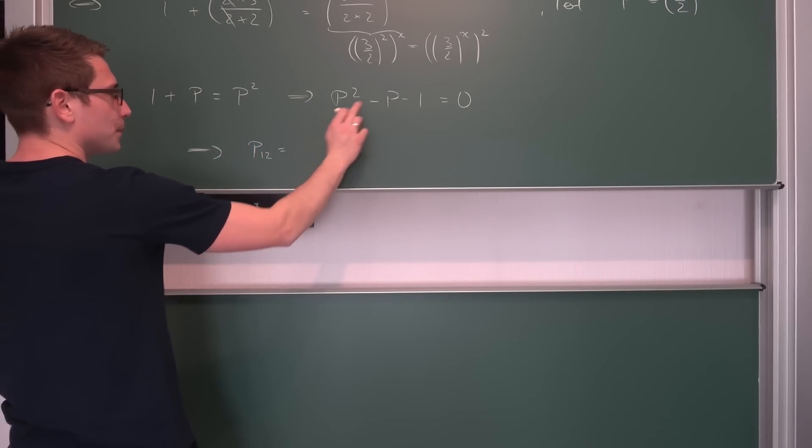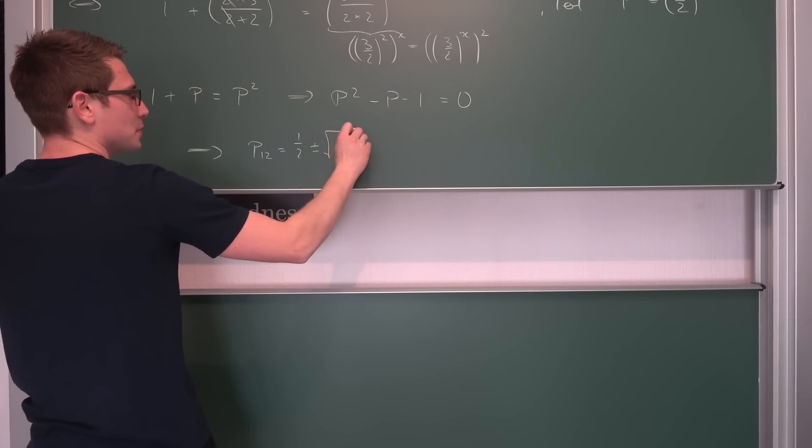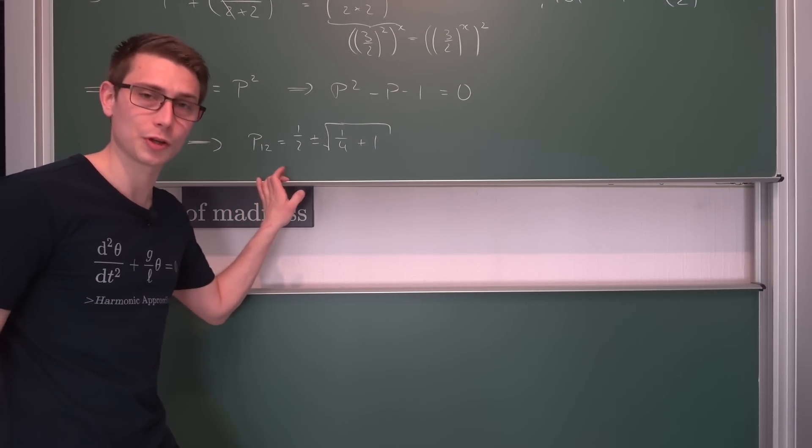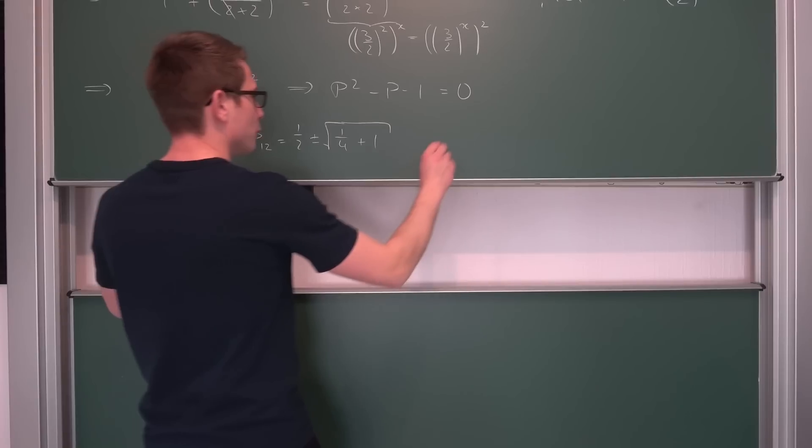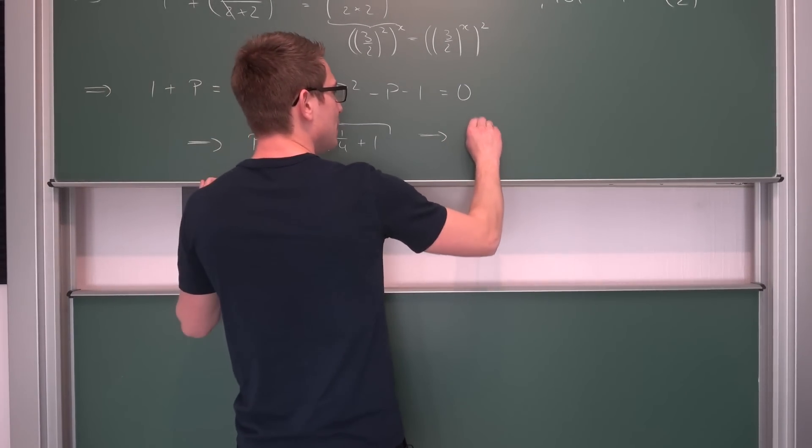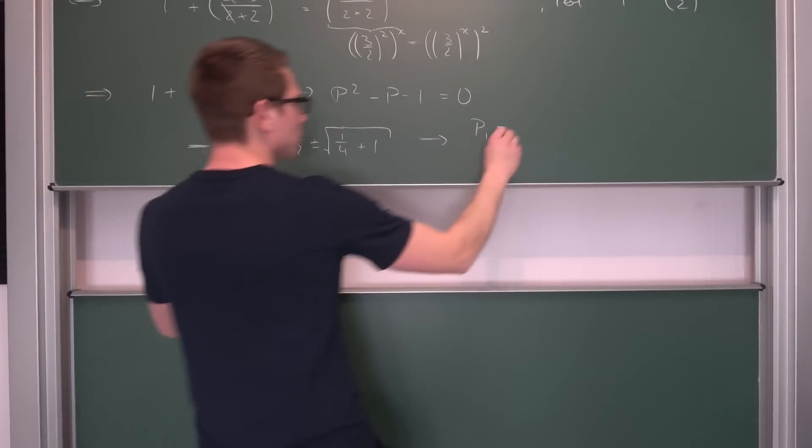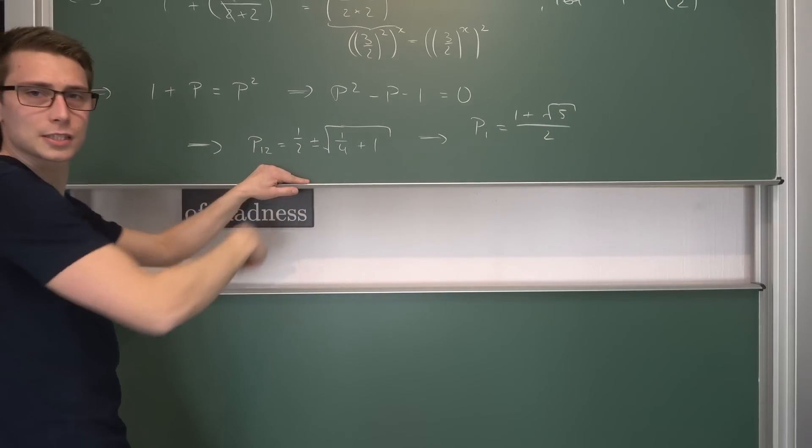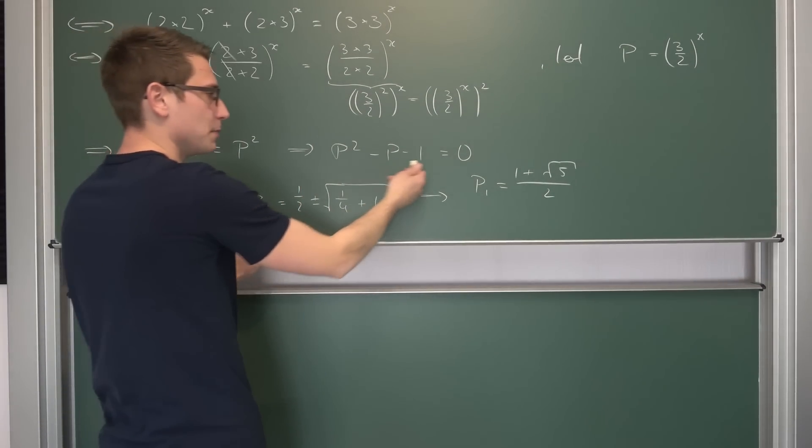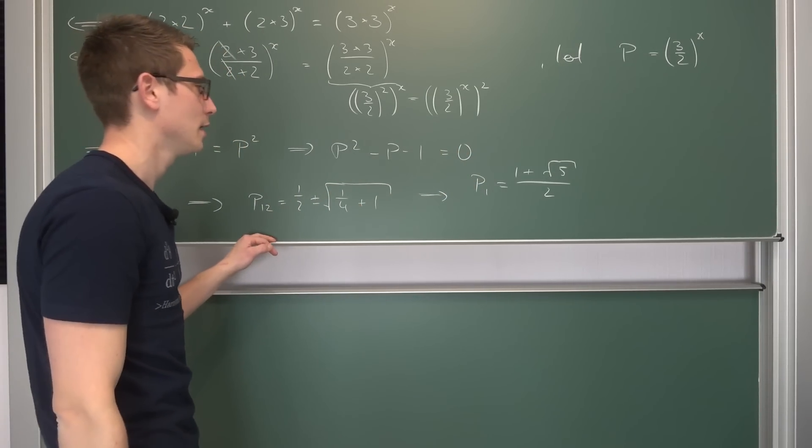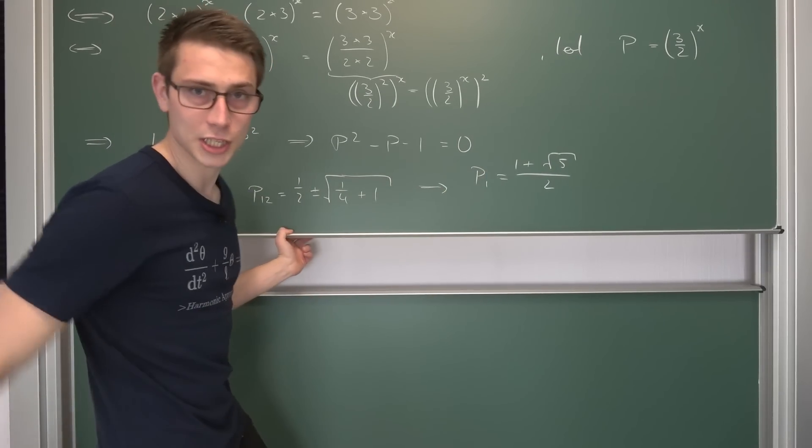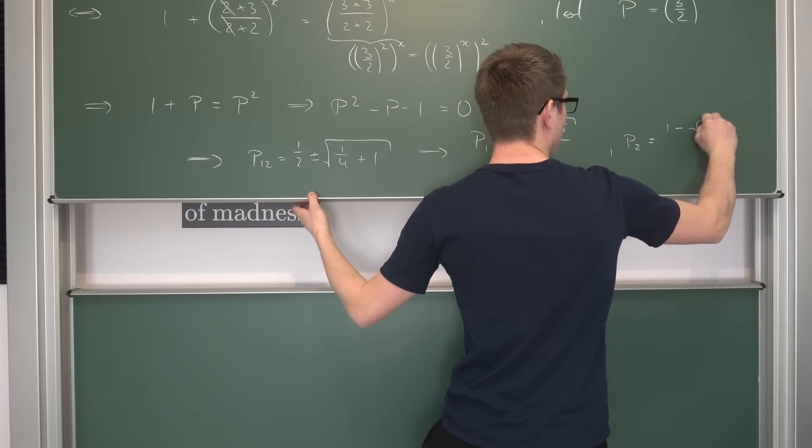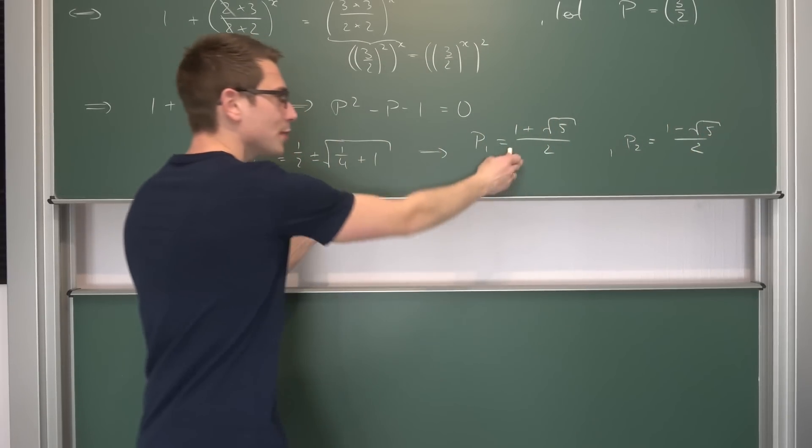1 and 2 being equal to 1 half plus or minus the square root of 1 quarter plus 1. And 1 quarter plus 1 is 1 quarter plus 4 over 4, which is 5 over 4, giving us two solutions for rho. Namely, the first solution is equal to 1 plus the square root of 5 divided by 2. And the other one is its conjugate. This might be familiar to some of you. This is just the generating polynomial for the Fibonacci number, for the golden ratio. And the second solution is 1 minus the square root of 5 divided by 2. And this right here is the golden ratio.